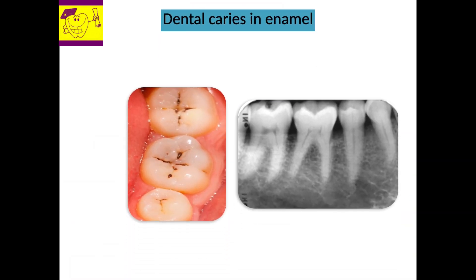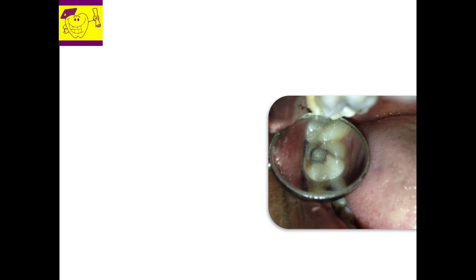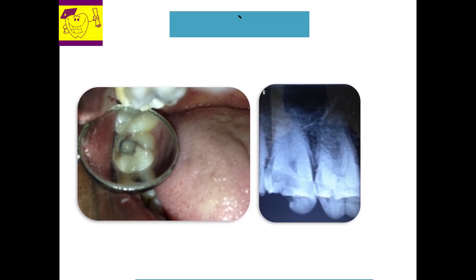Caries in enamel is seen clinically as a discoloration, or a catch is felt on the enamel surface on probing. Radiographic changes are not evident and the patient is also asymptomatic. If the caries proceed to dentine, the patient will experience severe sensitivity on probing or on exposure to hot or cold due to exposed dentinal tubules. Radiograph will show radiolucency involving enamel and dentine.